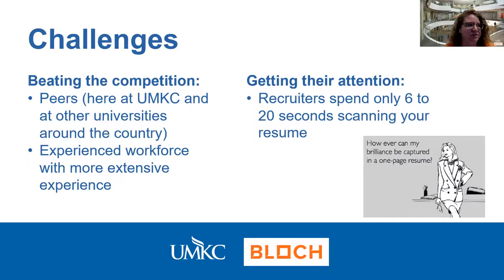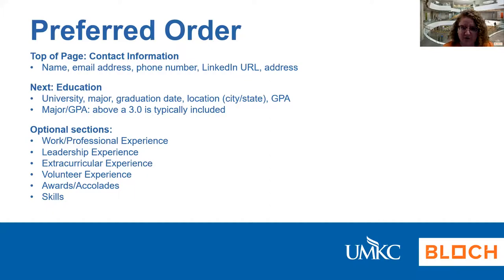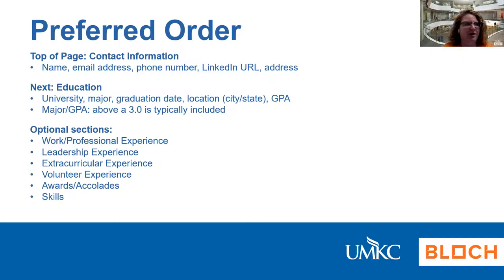So a typical preferred order for most of our students, whether you're an undergraduate or graduate, would be: at the top of the page is your contact information. You would include things like name, email address, phone number, and your LinkedIn URL if you have a LinkedIn profile. You can also include your address, though physical address is becoming less and less common — many employers don't really look at it anymore, especially with so many people working remote. But absolutely make sure that your name, email address, and phone number are on there, because those are going to be the top ways that a recruiter is going to connect with you.